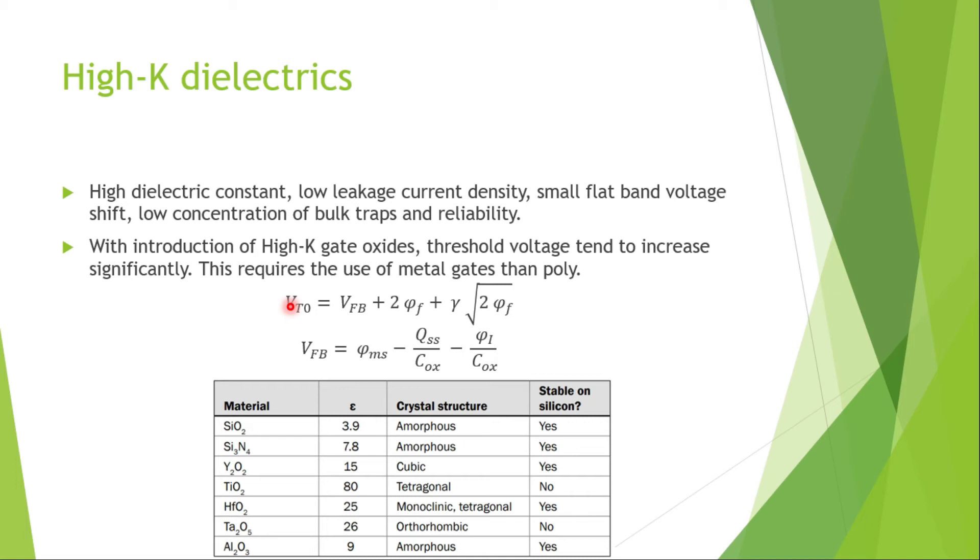With the introduction of high-K gate oxides, threshold voltage tends to increase significantly. This requires the use of metal gates than polysilicon. I have explained in one of my videos why polysilicon is used as the gate material in MOSFETs, but now polysilicon cannot stay because of this high-K gate oxides introduction. Because of this phi ms, which is the work function difference between the metal and the semiconductor, tends to increase, which will in turn increase the threshold voltage, which is not a good thing. To solve this problem, we have to use metal gates than that of the polysilicon.